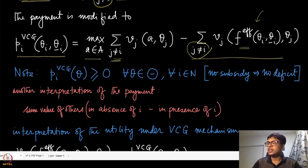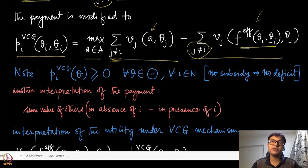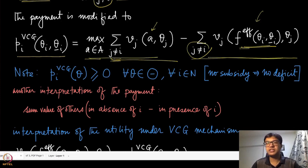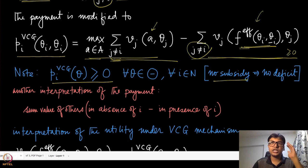Notice that we are looking at the sum of valuations except agent i in both terms. In the first term, we pick the alternative that maximizes that sum; in the second term, we evaluate the same agents at the allocation chosen when agent i is present. Since the first is a maximum, the second can only be less than or equal to it. Therefore, this VCG payment expression is always non-negative — meaning the mechanism satisfies the no-subsidy property.